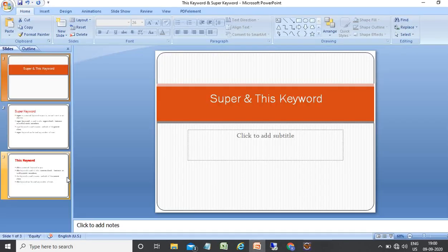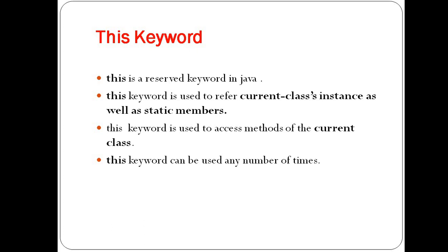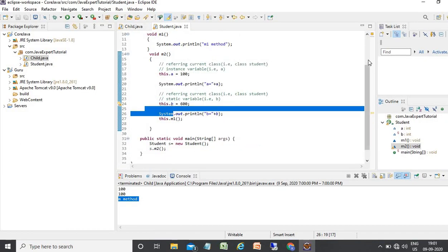Next is the this keyword. This is also a reserved keyword in Java. The this keyword is used to refer to the current class instance as well as static members. It is used to access methods of the current class, and it can be used any number of times.